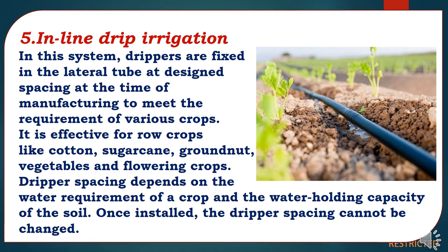The fifth method of drip irrigation is inline drip irrigation. In this system, drippers are fixed inside the lateral tube at designed spacings at the time of manufacturing to meet the requirements of various crops. It is effective for row crops like cotton, sugarcane, groundnut, vegetables, and flowering crops. Dripper spacing depends on the water requirement of a crop and the water-holding capacity of the soil, and once installed, the dripper spacing cannot be changed.